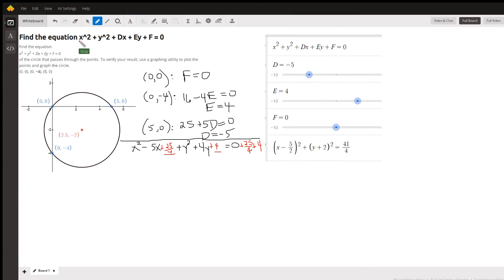Okay, we're given the general form for the equation of a circle, and three points that the circle passes through. So we need to find the values of D, E, and F.